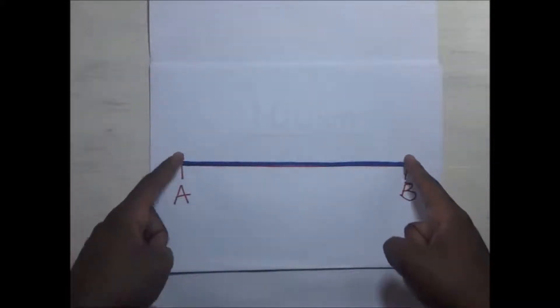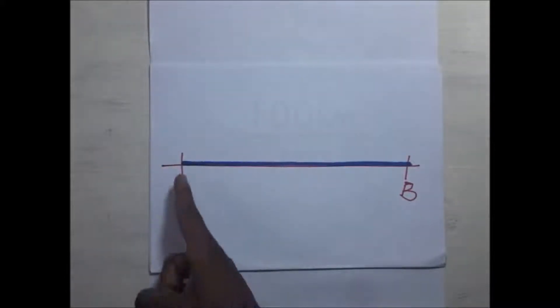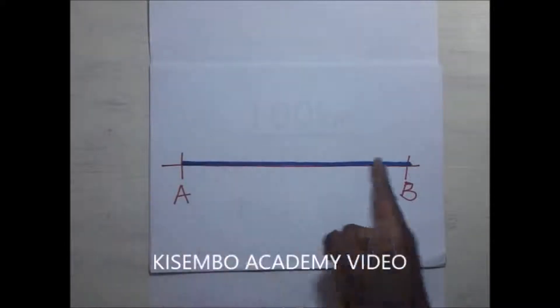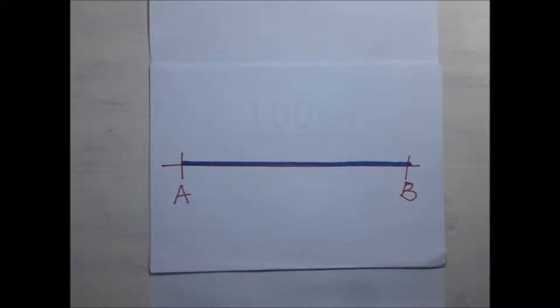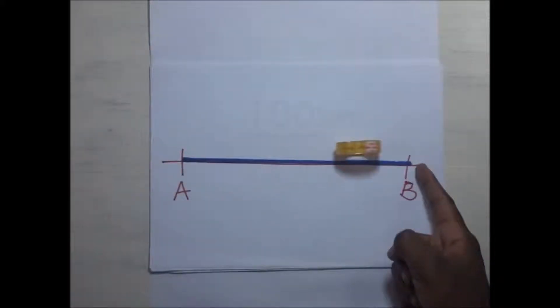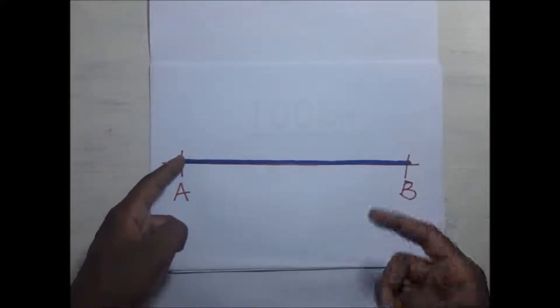Now let's assume that the distance between A and B is 100 kilometers, and this cellotape, when it was rotating and running from A to B, did cover those 100 kilometers in a certain time frame. So if we wanted to find the speed by which this cellotape roll was able to move from this point to this point, we are going to get the total distance covered from A to B and divide that by the total time taken.